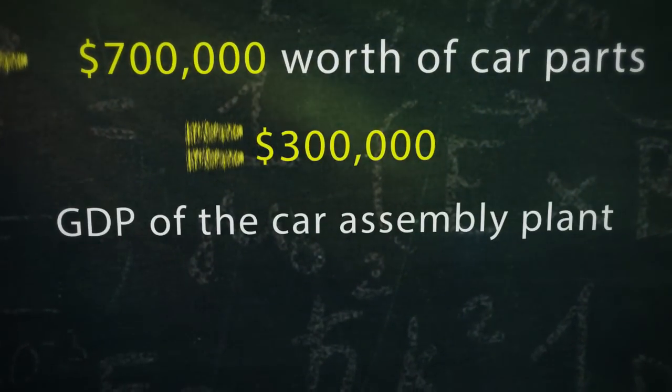So, in our example, $300,000 is considered to be the GDP of the car assembly plant.